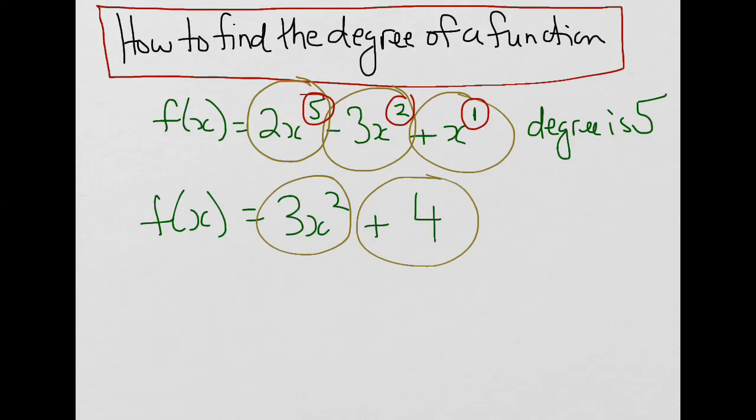In that case, what we're really saying is that it's 4x^0, because anything to the exponent 0 equals 1, which leaves you with 4. So if we wanted to find the degree, the first term has an exponent of 2, the second term has an exponent of 0. The largest exponent is 2, therefore the degree is 2.